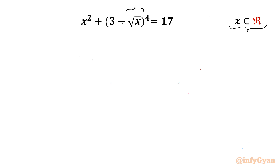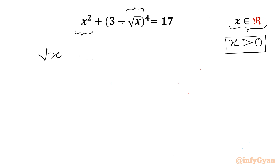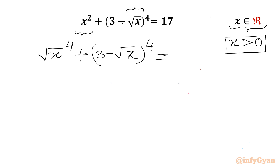We have square root x, so the radicand x must be positive for real solutions. Now we have x squared — we can write x squared as (√x)⁴, since x^(1/2) to the power 4 equals x². So our equation becomes (√x)⁴ plus (3 minus √x)⁴ equals 17.